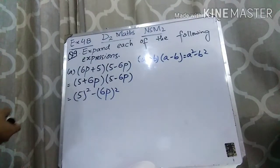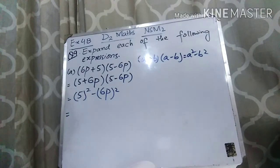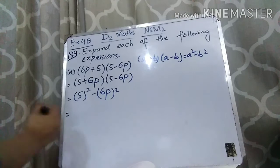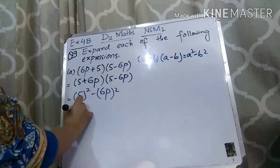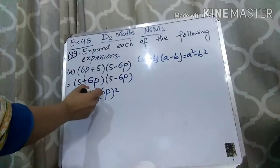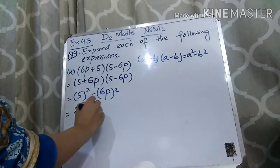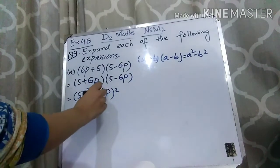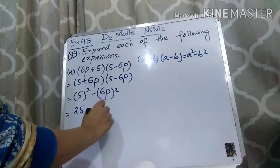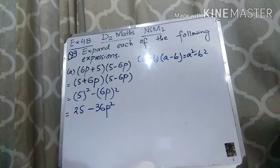Now we are going to solve it. 5 squared means you have to multiply 5 two times — 5 times 5 is 25. Minus: now take the square of 6 — 6 times 6 is 36. And take the square of P — when you take the square of P you get P squared. So 25 minus 36P squared is your answer.